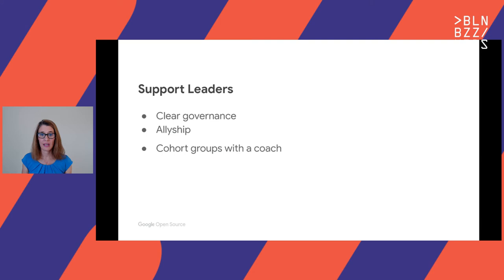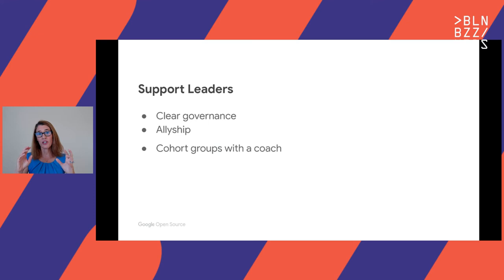And lastly, you need to invest in these leaders. I highly recommend creating cohort groups and assigning them to an executive coach so that together they can start learning how to solve these problems, with the coach there to help. This is a relatively new concept in open source, but it is working very well in many other places. These are just a few ways to build diverse leaders, and they're not hard to put into place — you just have to commit to them.